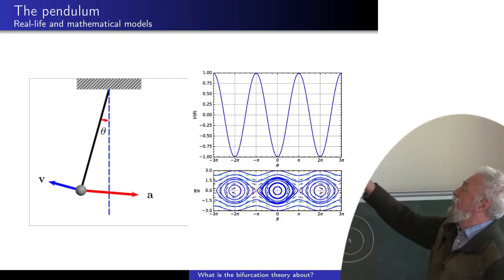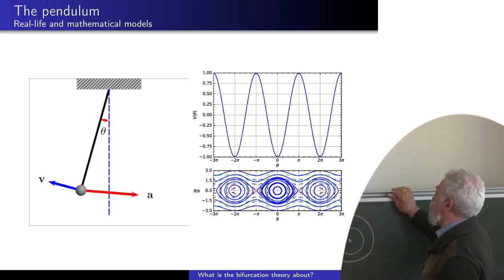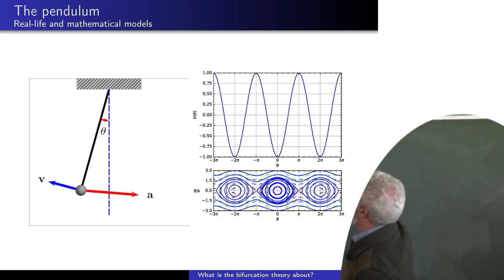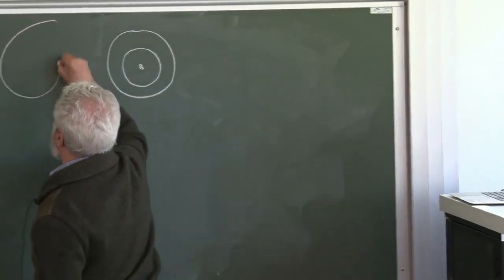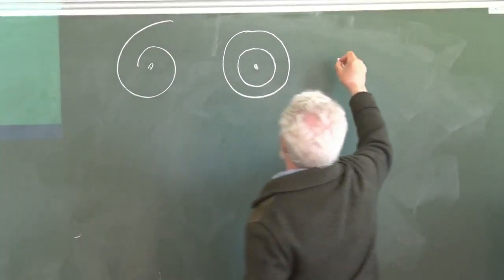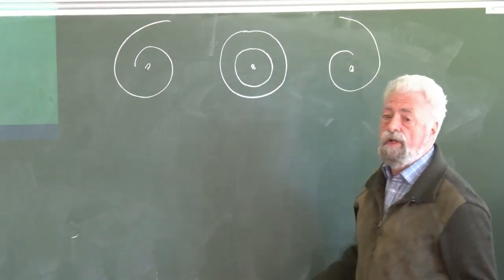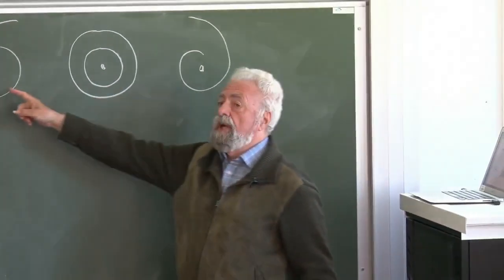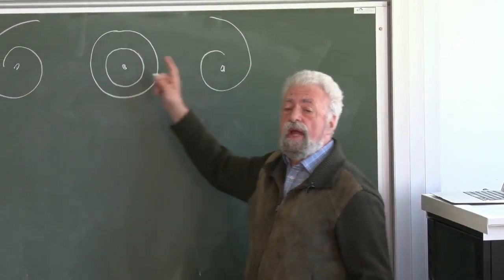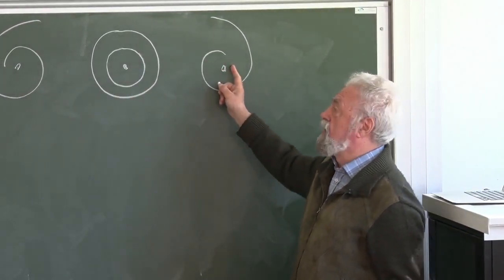The pendulum oscillates and the point uniformly moves along a circle. Children plot spirals like this and like this. This is pendulum with friction and this is pendulum with forcing.